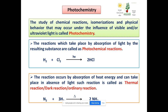The same UV-visible light is used to study photochemical reactions. The reaction which takes place by absorption of light by the reacting substance is called a photochemical reaction. For example: H₂ + Cl₂ → 2HCl in presence of light (hν — a photon from UV-visible region). This is a photochemical reaction.